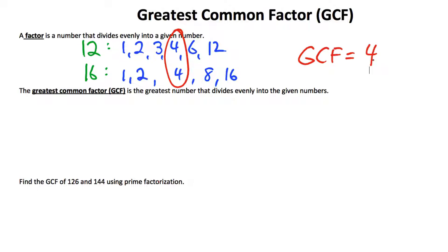To find the greatest common factor, you can think about the biggest number that divides into your numbers. If the numbers are small enough, you can list the factors like we did here and pick the largest one.